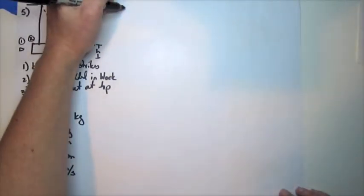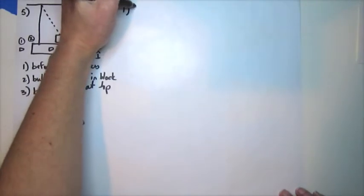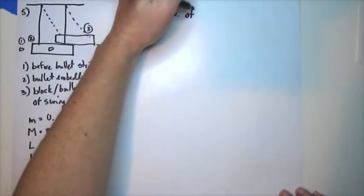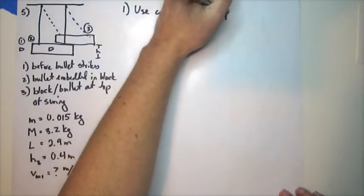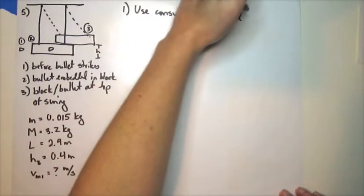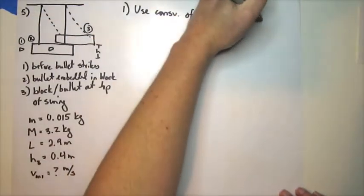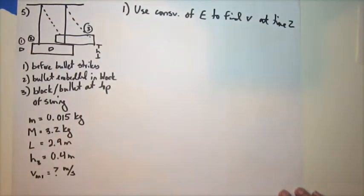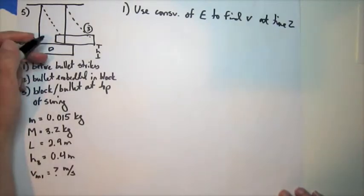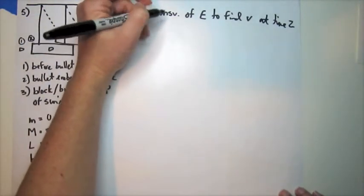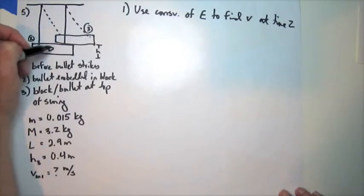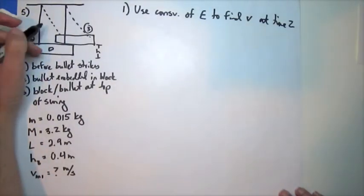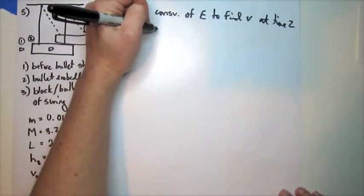So step 1. I'm going to use conservation of energy to find the velocity at time 2. So there's no spring here. There's no work done by friction or any non-conservative force. So I'm going to compare.